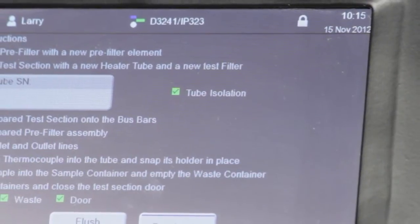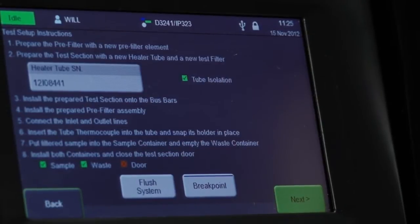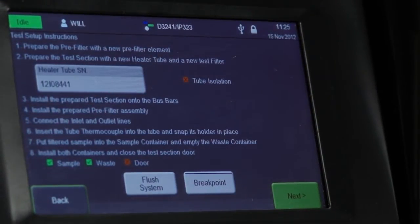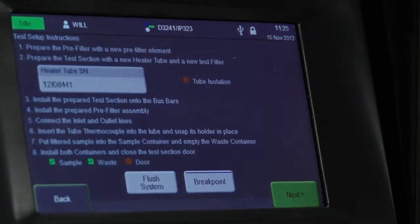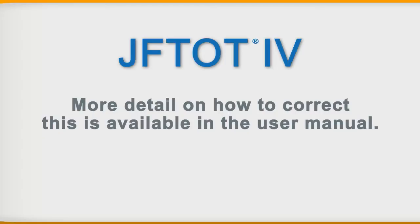Check the status of the tube isolation. If there is an electrical short between the heater tube and test section, you'll be able to see this on the screen. If you see this indicator, you'll need to correct it before moving to the next step. More detail on how to correct this is available in the user manual.